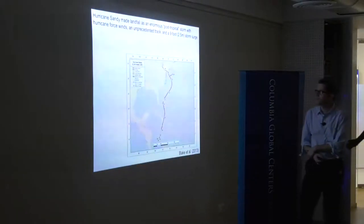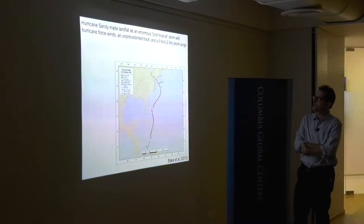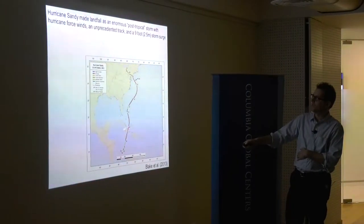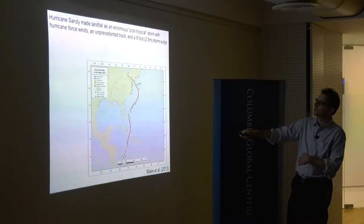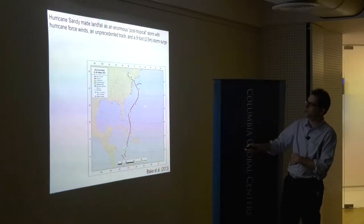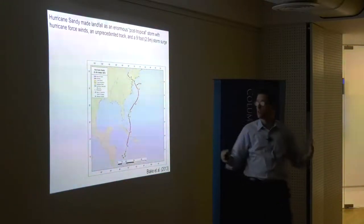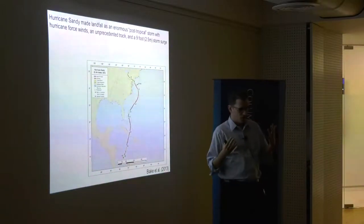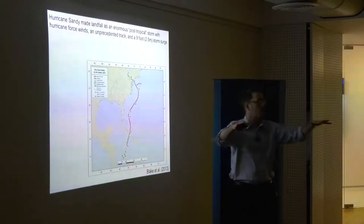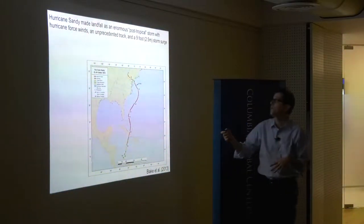Hurricane Sandy happened in October 2012. This was the track: it started in the Caribbean, came up, did a lot of damage in Cuba, Jamaica, Haiti, went through the Bahamas, and then made this sharp left turn — which was extremely unusual, hadn't happened before in our region. It made landfall as a storm that was not actually very powerful in terms of maximum winds, but it was extremely large.